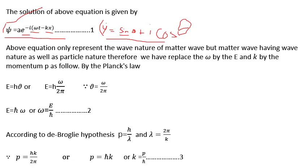The next problem we observe is that ω and k both represent wave nature only. There is no quantity here representing particle nature, yet psi represents both particle and wave nature. Therefore, we will change these two quantities to ones that represent both wave nature and particle nature. In quantum physics, ω is related to energy and k is related to momentum, as we will calculate below.